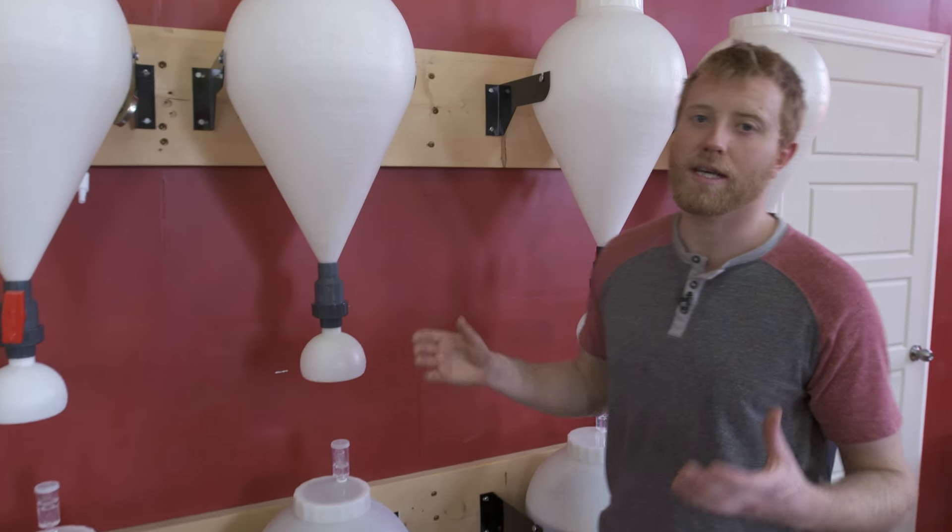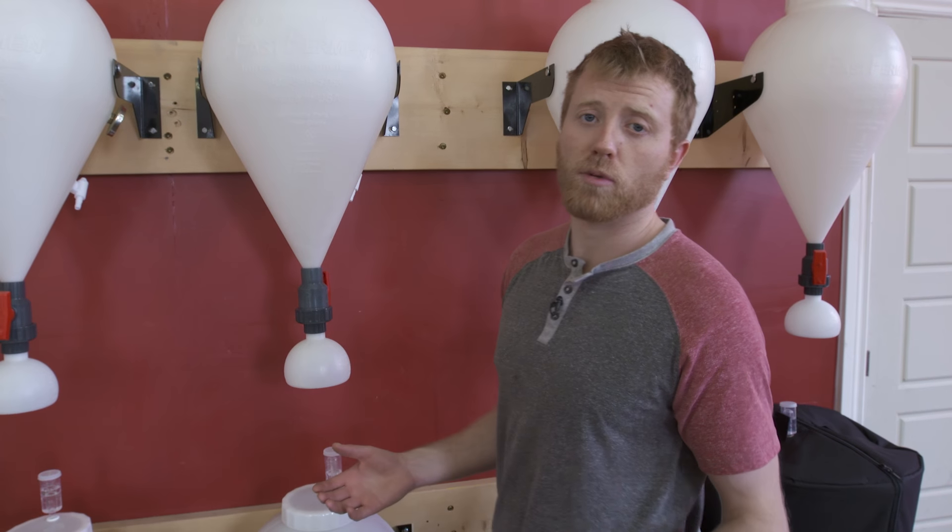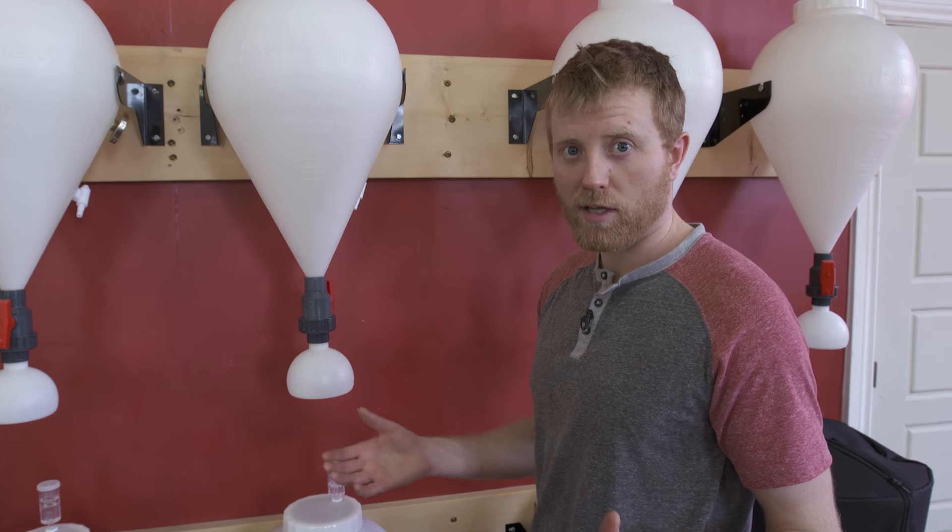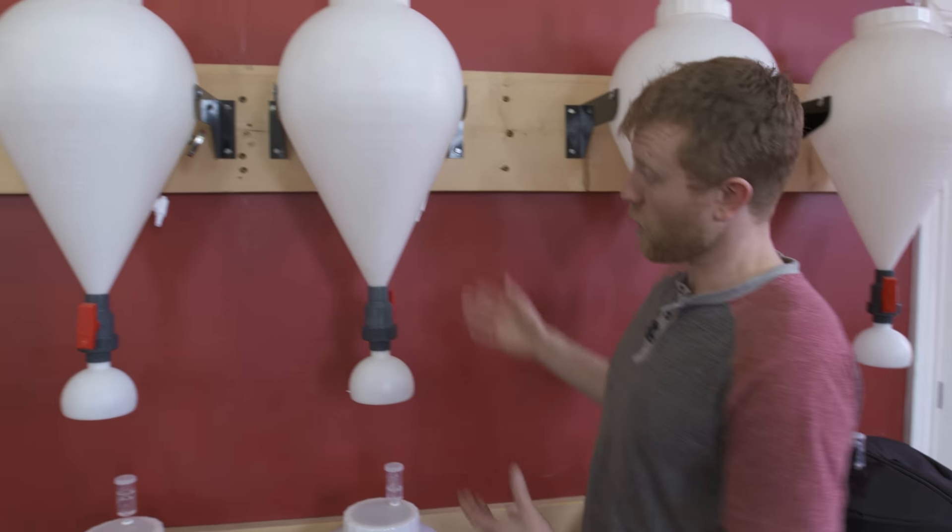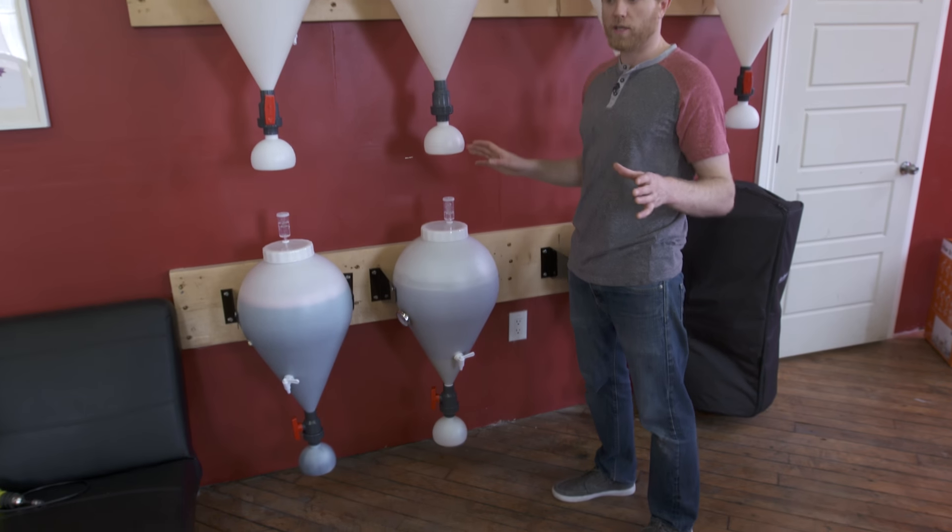The fast ferment is also the same footprint as a bucket and carboy. So we're not going to be taking up extra space with buying a fast ferment. And you can actually put it on the wall so it's completely out of the way. You can still vacuum under it, sweep, whatever you need to do.